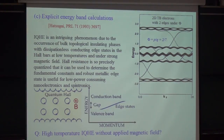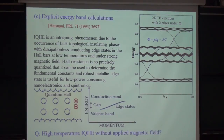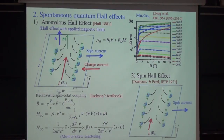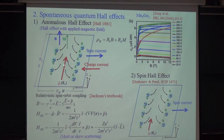Soon after the observation, people felt this kind of possibility, but nobody paid attention until the last decade when people started to think about topological materials. Before talking about this work, let me introduce two Hall effects without an applied magnetic field. The first one is the so-called anomalous Hall effect. Two years after Hall found his ordinary Hall effect, he found that in a magnetic conductor instead of a non-magnetic one, even if you take the magnetic field away, you still have a Hall voltage across the sample.